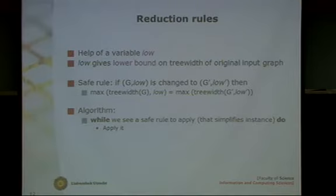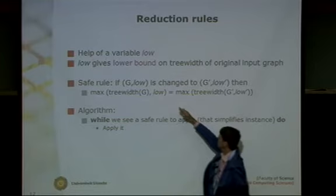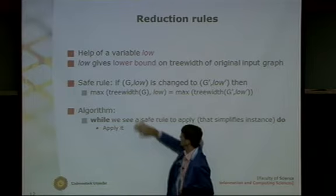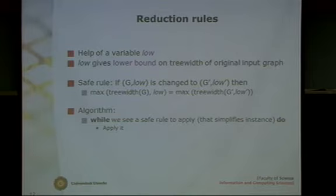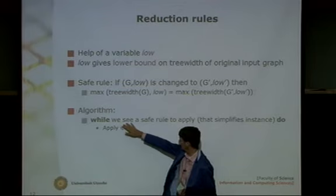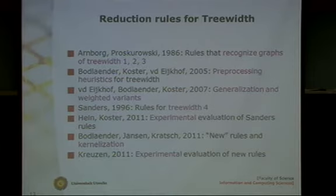It is helpful to have some lower bound for your graph. We have an extra variable I call 'low' — the lower bound for the tree width of the original graph. A rule is safe if I modify my graph and lower bound such that the maximum of the tree width and the new lower bound equals the maximum for the original graph. The algorithm is: while I can find some safe rule in my graph, I apply it and repeat.